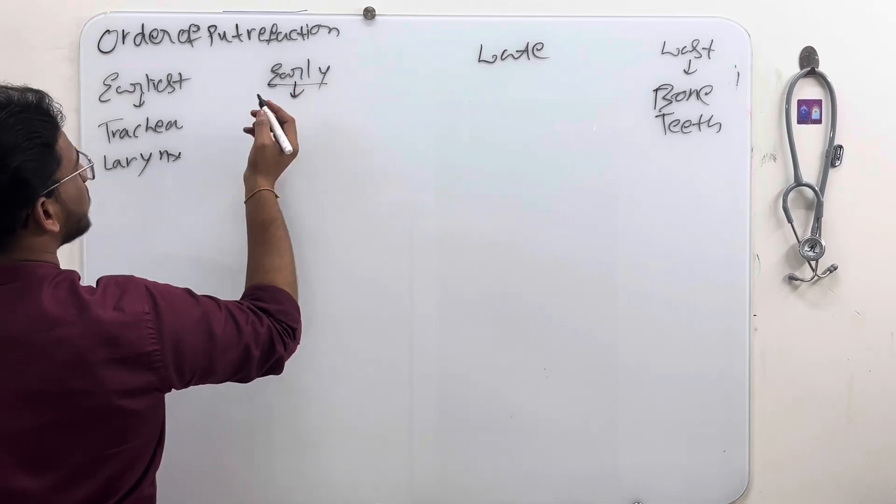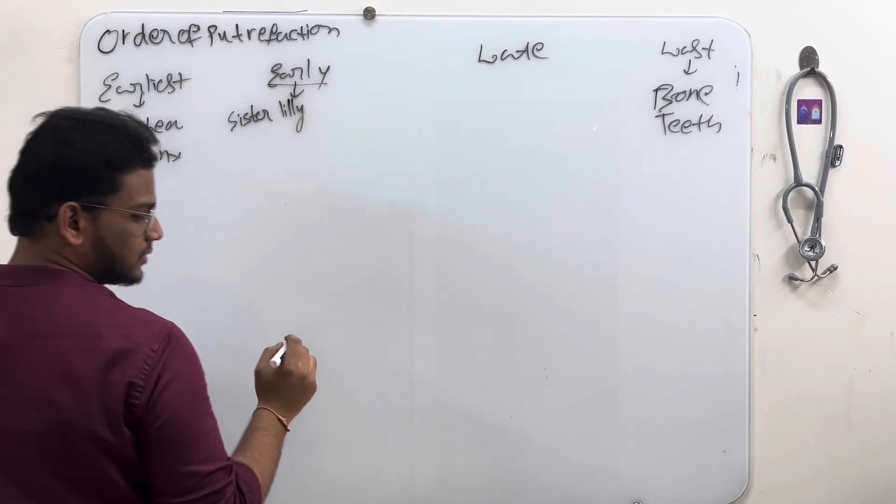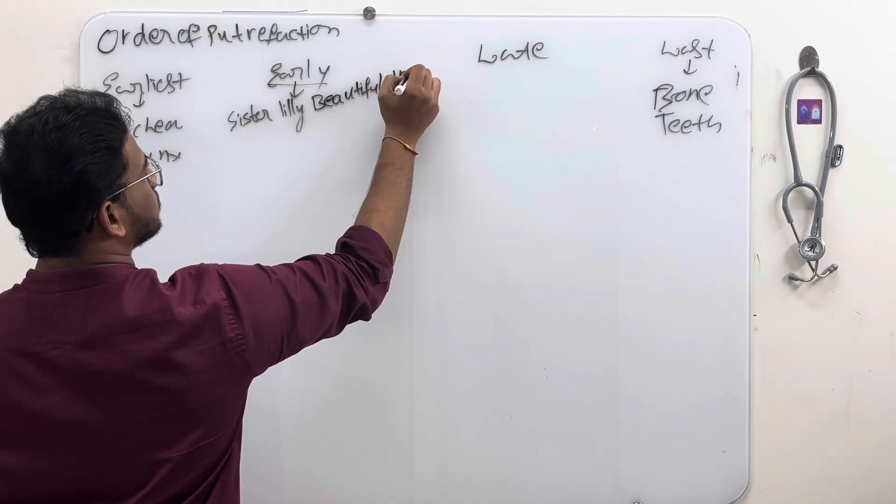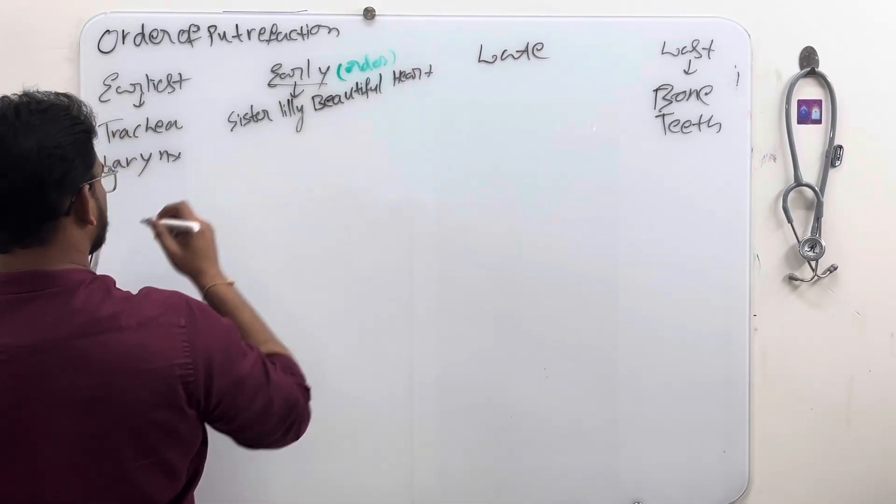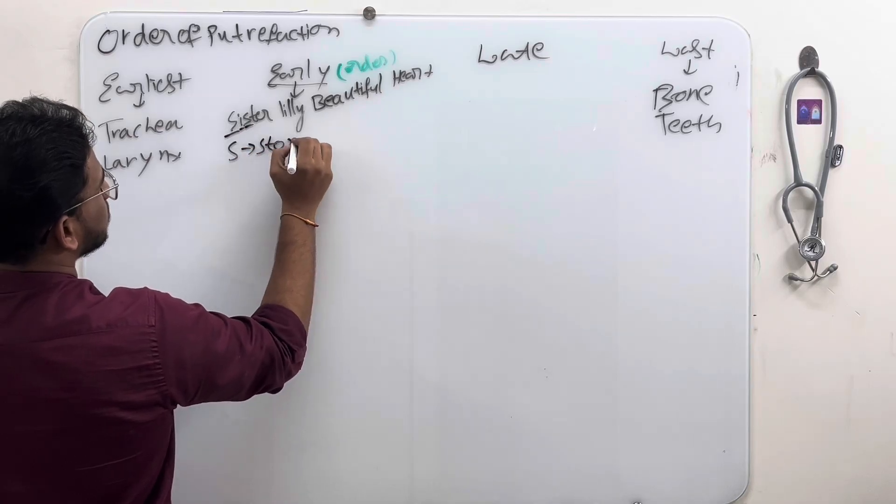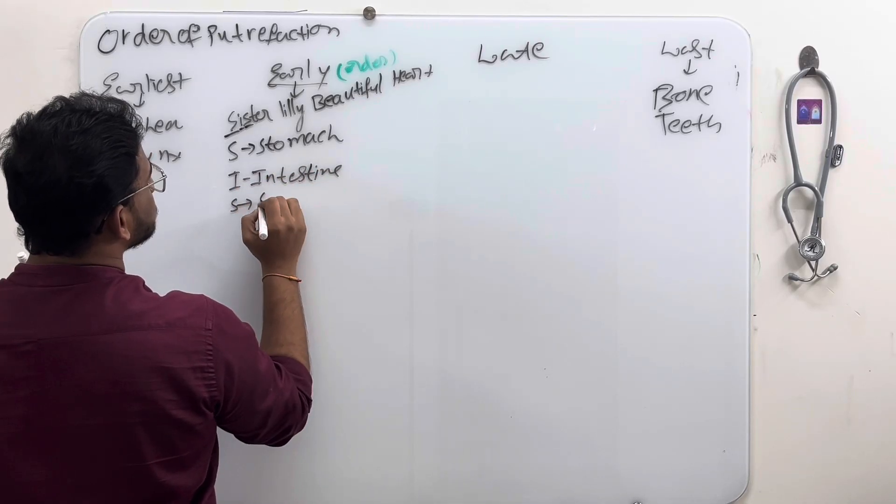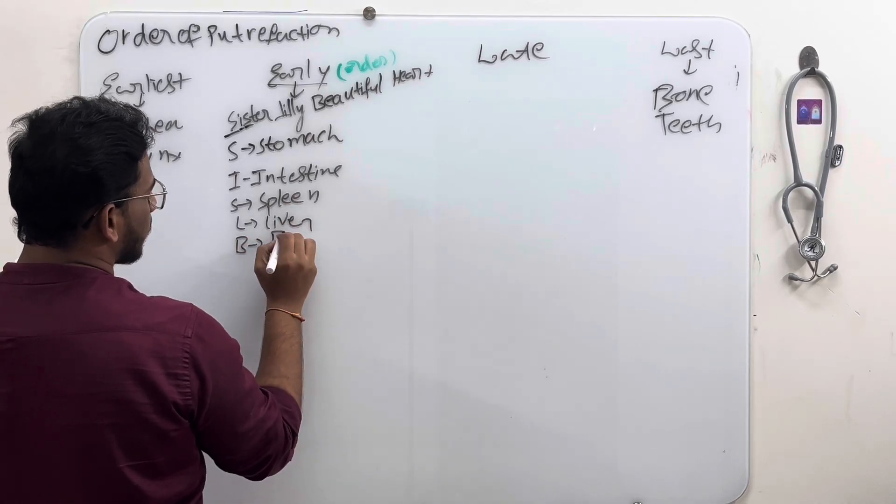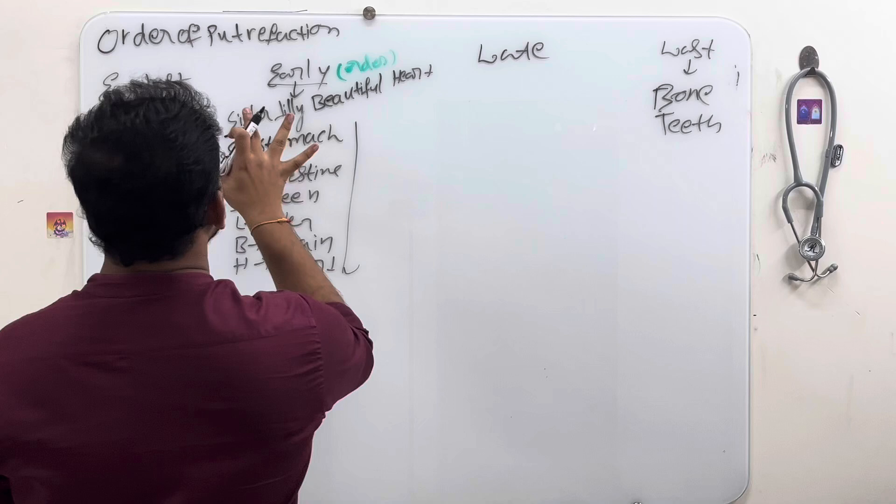In early, remember a mnemonic: Sister Lily Beautiful Heart. Remember the order also, order is important. S means stomach, I means intestine, another S means spleen, L means liver, B means brain, H means heart. This is early.